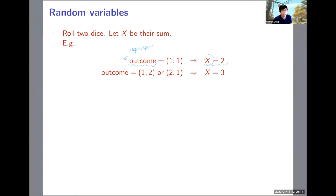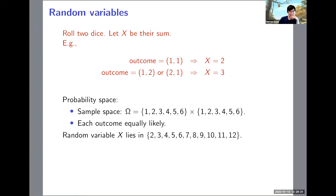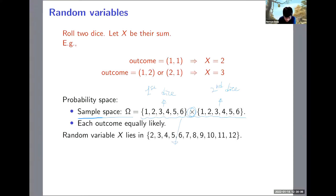That's a simple example of what random variables are. Random variables are defined on the probability space. When we refer to the sample space, we usually see something like this — these are the possible values for the first die crossed with the possible values for the second die. If we expand that, we have a large omega space of all possible value combinations between the first and second dice.